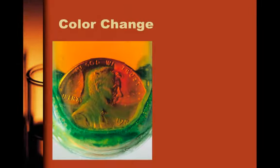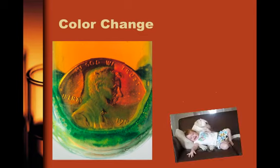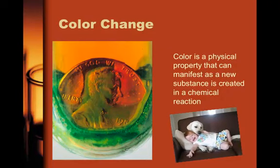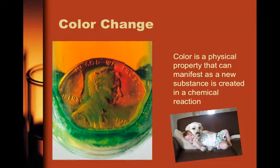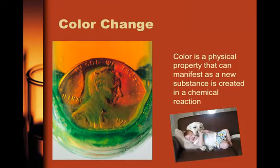Next is a color change. I've got a penny here sitting in some nitric acid, and you can see there's this green color — that is a color change that occurs during this chemical reaction. Since color is a physical property, if a new substance is being formed and it has a new color as its property, then you'll see the evidence of that color macroscopically.